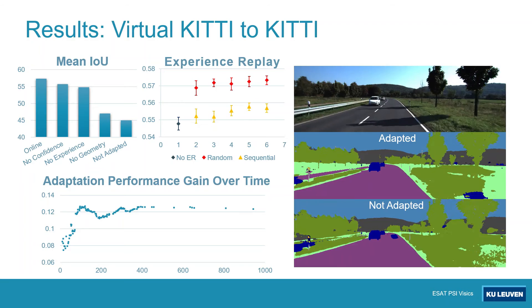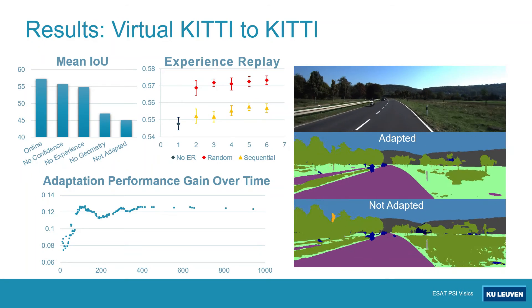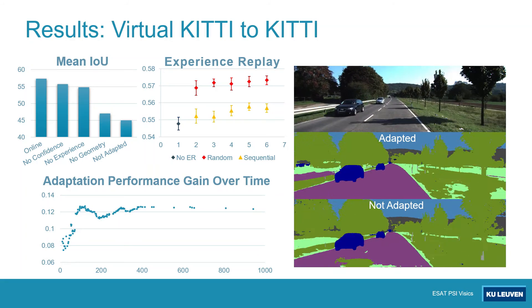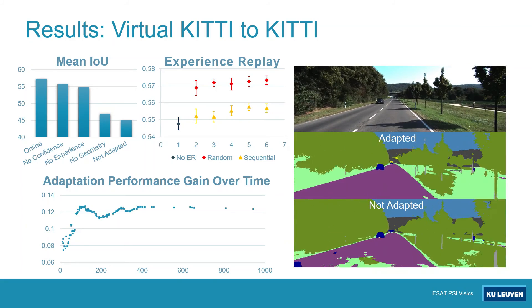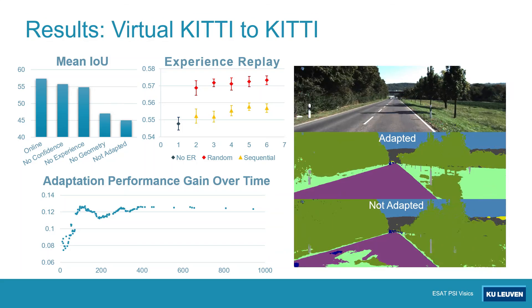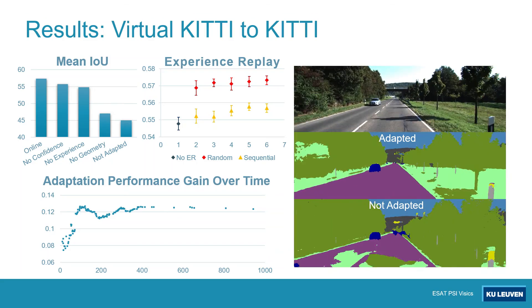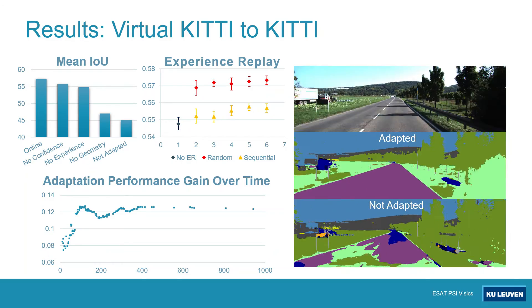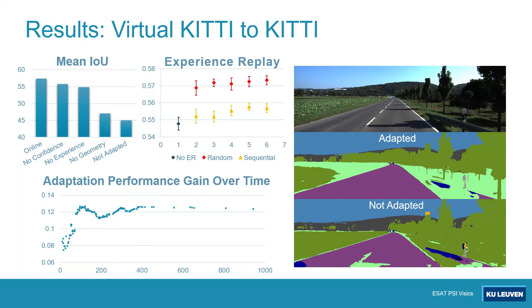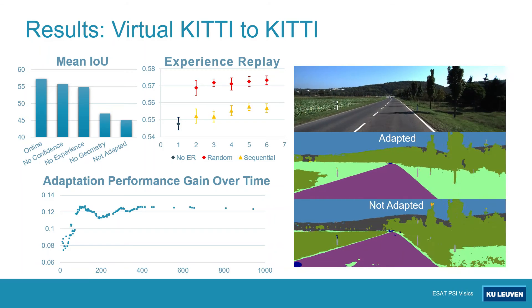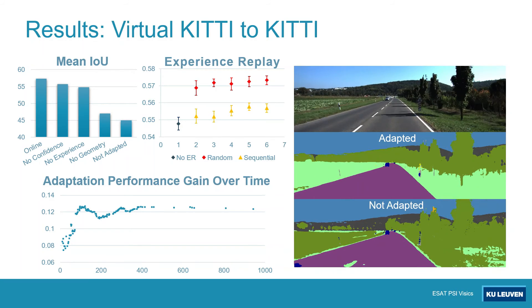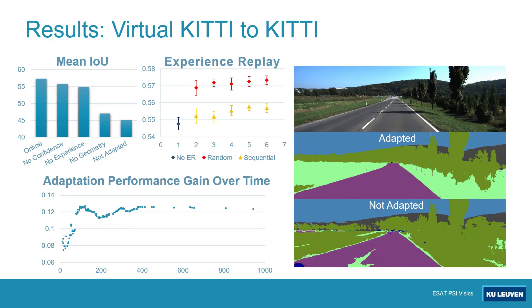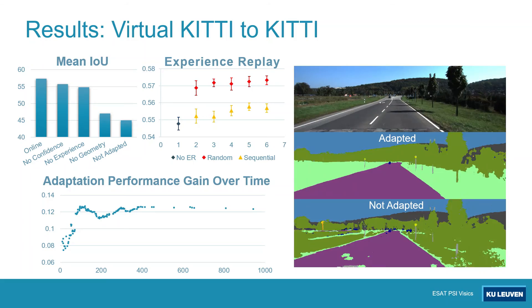This slide shows the adaptation results when transferring from virtual KITTI to real KITTI. Online adaptation significantly increases mean intersection over union compared to the non-adapted model, and all components of our method contribute to the performance gain. Increasing the number of past samples drawn from the replay buffer also improves performance, and drawing these samples randomly is more beneficial than using several consequent preceding triplets. Our method benefits most from adapting to videos with more than 100 frames.